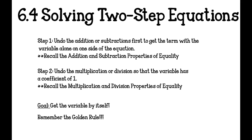Step 2 is to undo multiplication or division so that the variable has a coefficient of 1. If I have 3 times x, to undo that multiplication I would divide by 3 on both sides. Or if I had x divided by negative 4, I'd multiply by negative 4 on both sides. That's the multiplication and division properties of equality. Our whole goal is to get the variable by itself, and the golden rule is what you do to one side, you must do to the other.